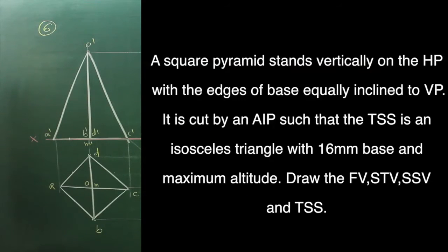The square pyramid stands vertically on HP with the edges of base equally inclined to VP. It is cut by AIP such that TSS is an isosceles triangle with 16mm base and maximum altitude. Draw front view, sectional top view, sectional side view and TSS.